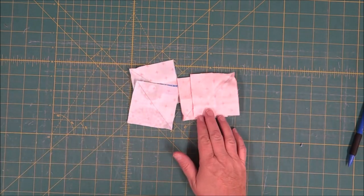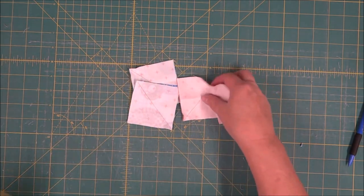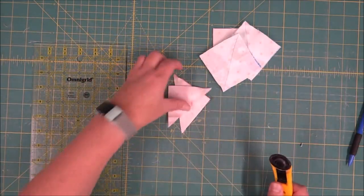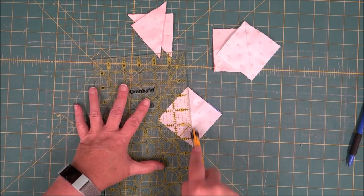Now that I have these all sewn, I can go ahead and cut on the drawn line. This will give me two half square triangles for each square.